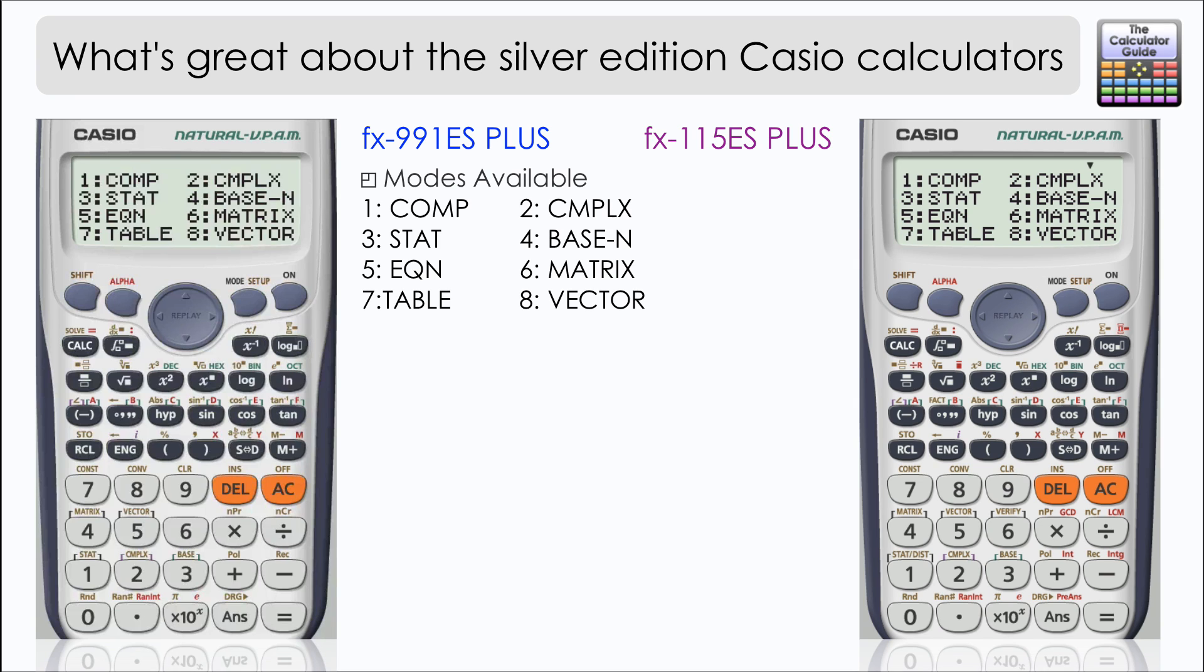Five is an equation solver, really very useful, six is for matrix calculations, seven is table mode which you may be familiar with already, and eight is used for vector calculations.